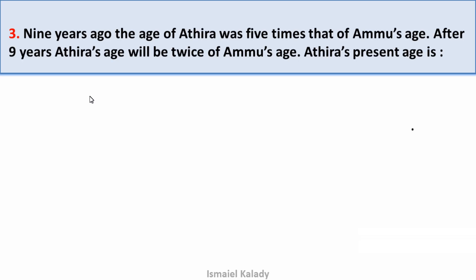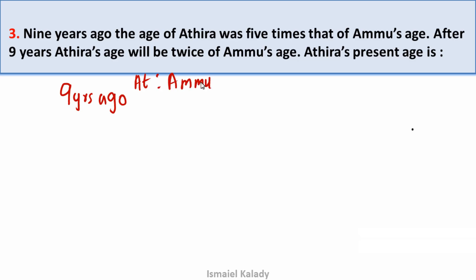The ratio is x and y. We apply the age problem logic. Nine years ago, Adhira's age was 5 times Ammo's. We set up the ratio conditions: nine years ago Adhira's age is 5 units. This is Adhira's age setup.